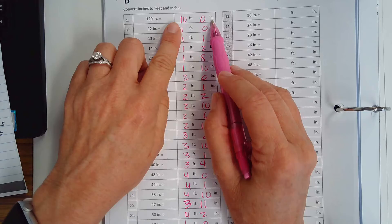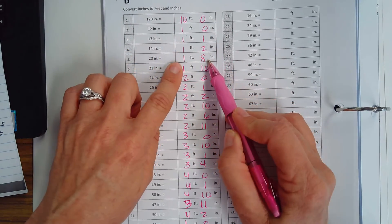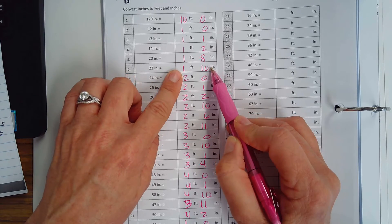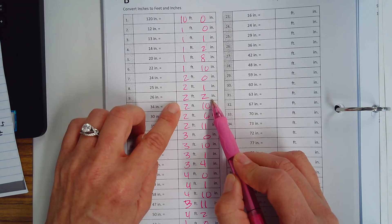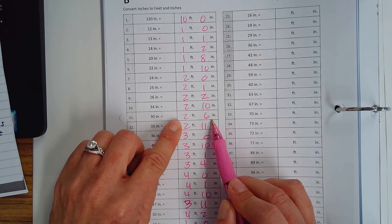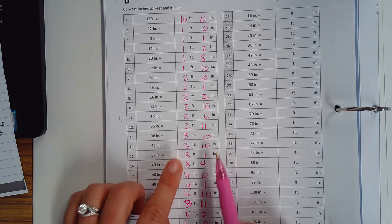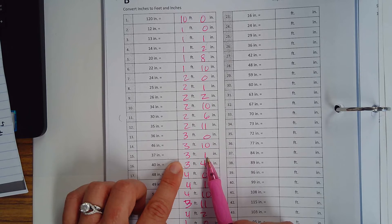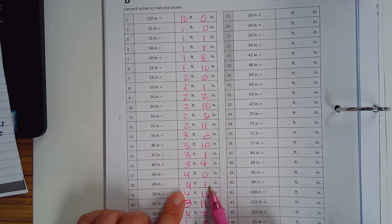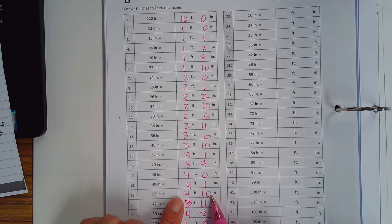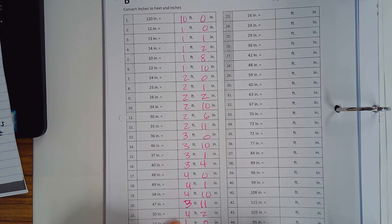Ten feet, one foot zero inches, one foot one inch, one foot two inches, one foot eight inches, one foot ten inches, two feet zero inches, two feet one inch, two feet two inches, two feet ten inches, two feet six inches, two feet eleven inches, three feet zero inches, three feet ten inches, three feet one inch, three feet four inches, four feet zero inches, four feet one, four ten, three eleven, four two, one zero.